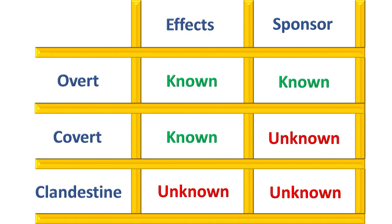You guys know how I love to oversimplify with the Matrix, so check this out. On the left we have the three types of missions. In the middle column we have the effects, and in the right column we have those responsible for the effects.